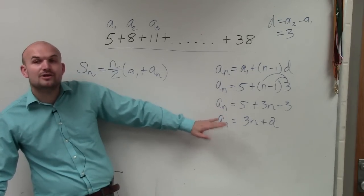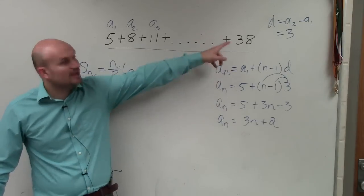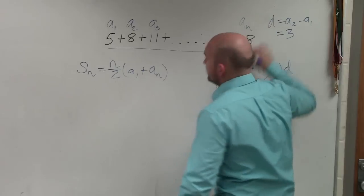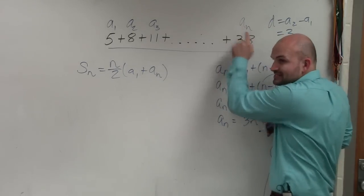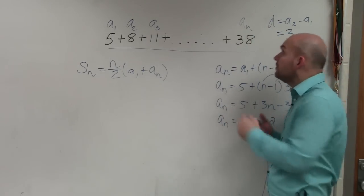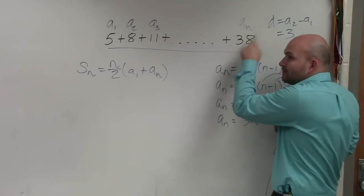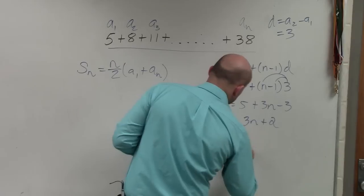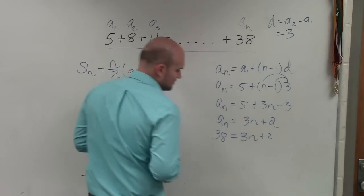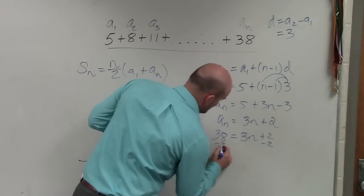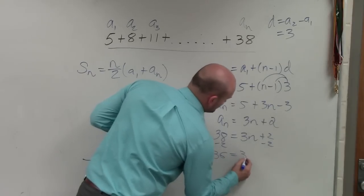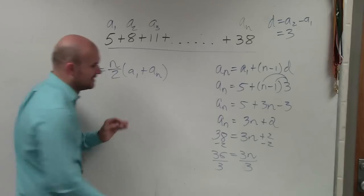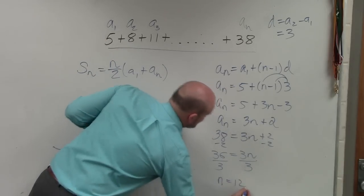So the thing that we do not know is we don't know what number term this is. This is a sub n for all we know. We don't know what number this is going to be. So what we're going to have to do, we know that a_n is 38. We just don't know what n is. So I'm going to plug in 38 equals 3n plus 2. I'm going to subtract the 2 and get 36 equals 3n. Divide by 3, and I get n equals 12.